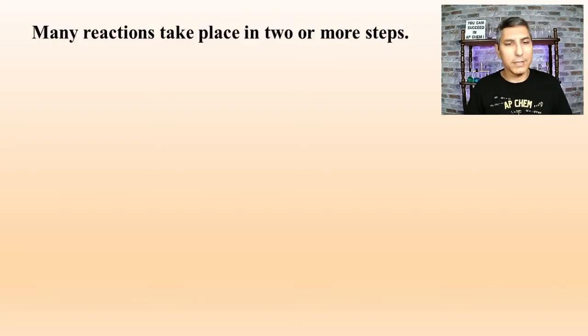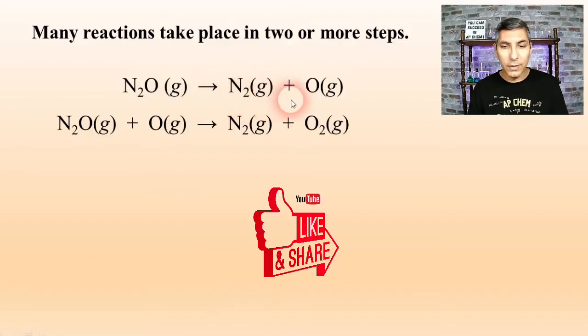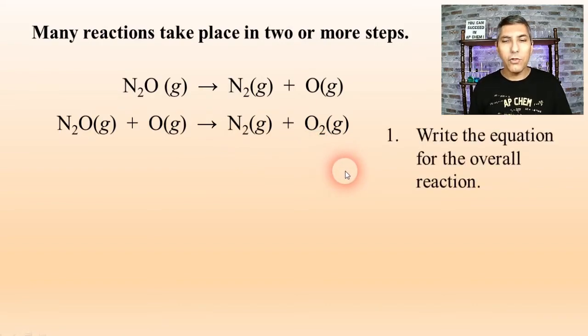As we take a look at multi-step processes, it's interesting that a lot of reactions, maybe even most reactions, take place not just in one step, but two, three, four, even more steps than that. Let's take a look at one example of such a reaction mechanism here. We have a two-step process where we have dinitrogen monoxide gas decomposing into nitrogen gas and an oxygen atom, and then another dinitrogen monoxide molecule is reacting with an oxygen atom to create nitrogen gas and oxygen gas. Our first question here is, write the equation for the overall reaction for this process.